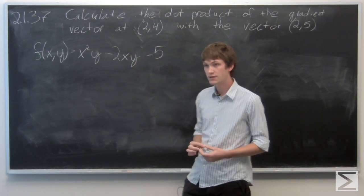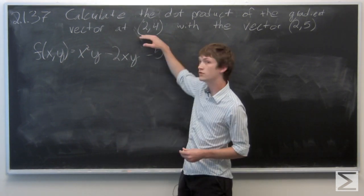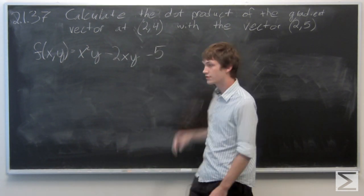In this problem we're asked to find the dot product of the gradient vector at the point (2,4) with the vector (2,5).